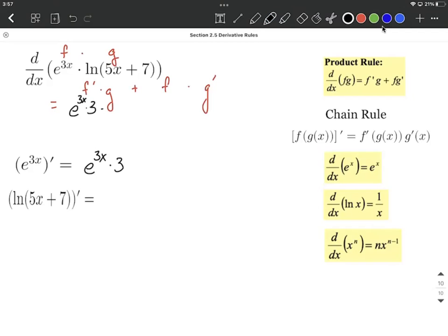That's supposed to be multiplied by our g function, so natural log of 5x plus 7, plus we're going to fill in for f, which is e to the 3x, multiplied by the derivative of g, so that natural log. Again, down below we have a function within another function, so we first focus on the outer function, the natural log part.